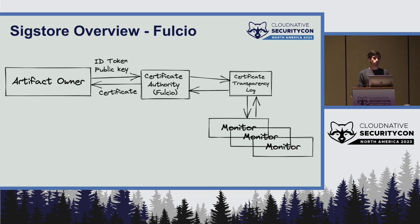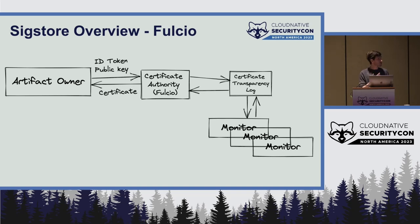You'll also see this within WebPKI, where publicly trusted CAs will issue certificates for domains and include these in certificate transparency logs, so that domain operators — or in this case artifact owners — can monitor the logs to see how their identities show up in them.